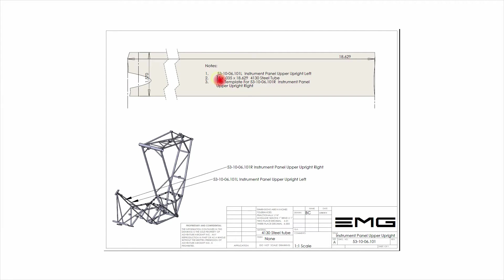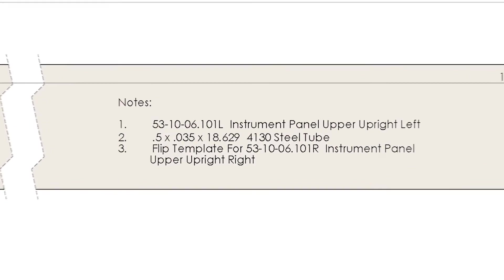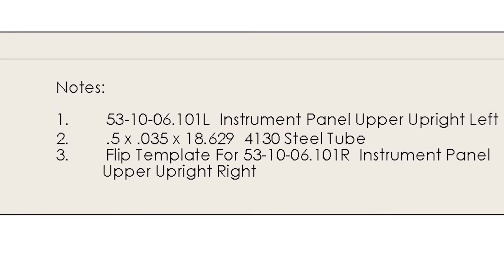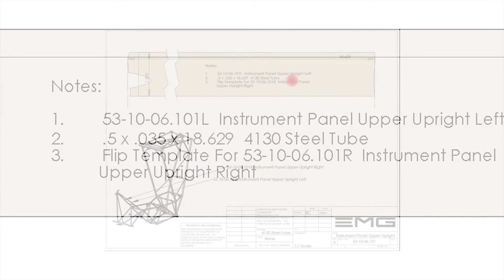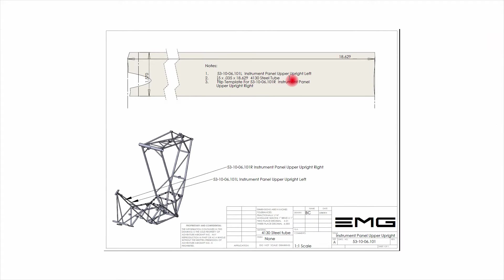Right up here we have in note number two the dimensions for the tube that you're going to be using. So in this case this template is going to be used on a piece of half inch chromoly steel that's got .035 inch wall thickness and the total length of that tube that we're going to cut to length before we wrap the template around is going to be 18.629. Those are really tight dimensions. The minimum dimension is 18.629, so even if you cut it to 18.63 you're going to be in great shape.